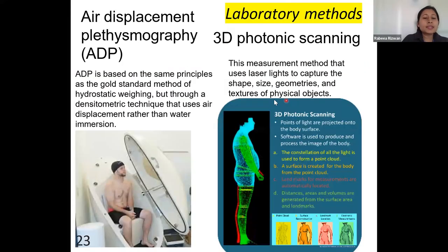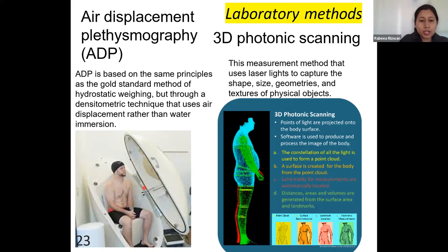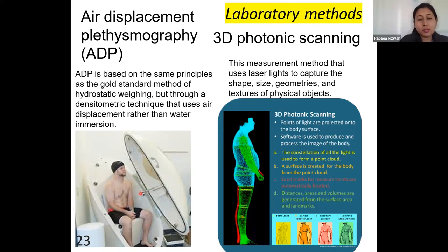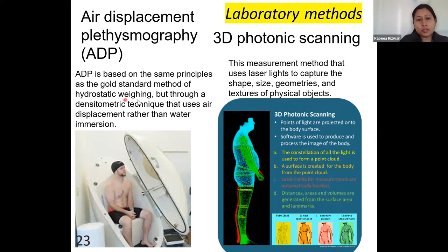Next is ADP, which stands for Air Displacement Plethysmography. ADP is an instrument procedure used to measure body composition and is an alternative to the water submersion procedure. It can also be used to evaluate the weight and volume of a baby, making it very convenient as an alternative to submerging infants in water. So ADP is the alternative to hydrostatic weighing.